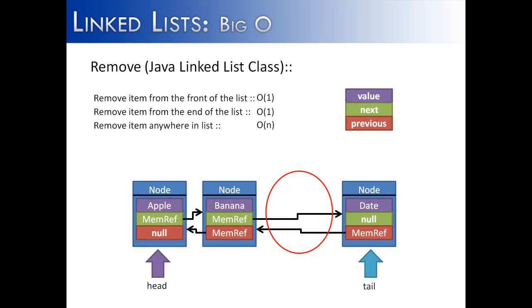So we've shown you in this video the three major operations you would do with a linked list: search, insert, and remove. For each one, accessing or modifying the first or last item happens to be constant time. But removing, adding, or getting an unknown item somewhere inside the list takes Big O of N, because you're going to have to perform a search on the list before you can insert, remove, or simply get the result.